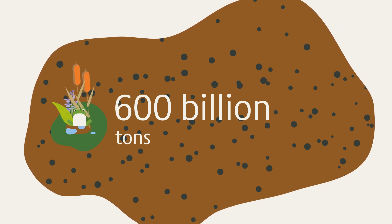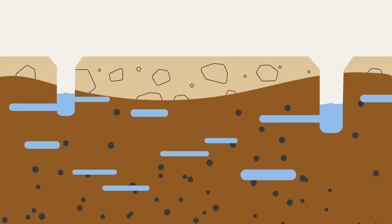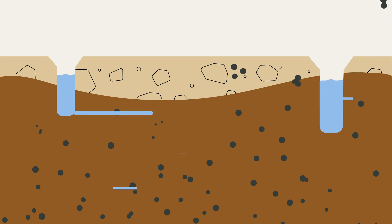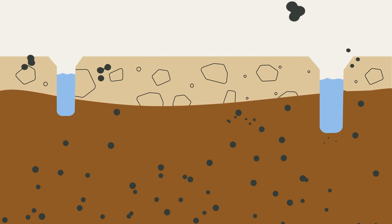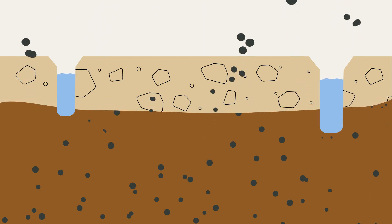But they can only store carbon as long as they are wet. Because if water is withdrawn from the peatlands, oxygen penetrates and microorganisms can decompose the peat. The stored carbon is released into the atmosphere as CO2. Then peatlands turn from climate guardians to climate killers.